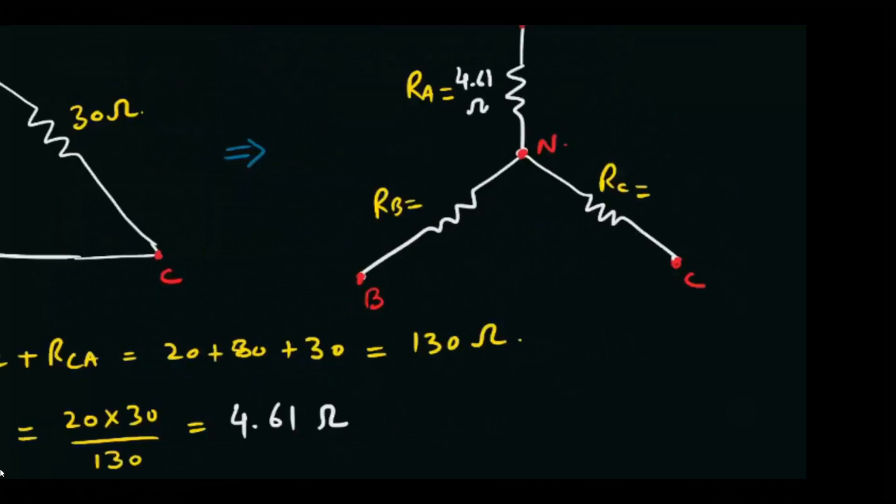And now simply, we will replace all resistances between A, B, and C nodes. I hope you clearly understand how to do delta to star conversion.